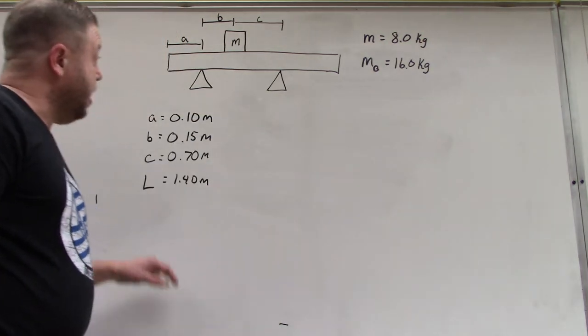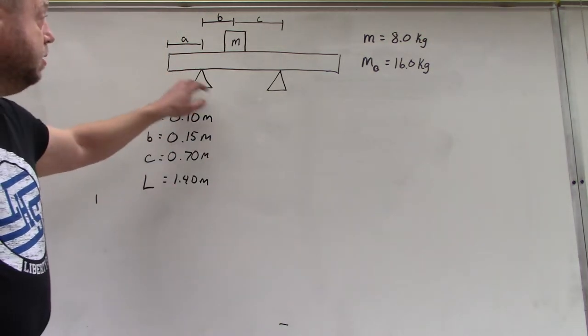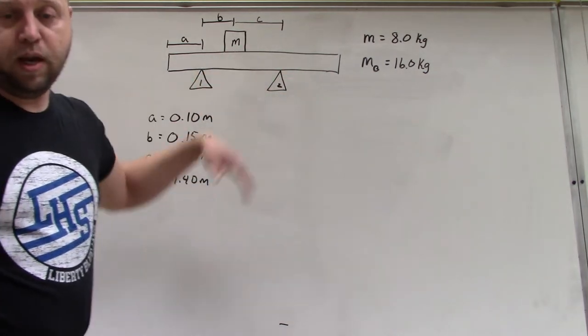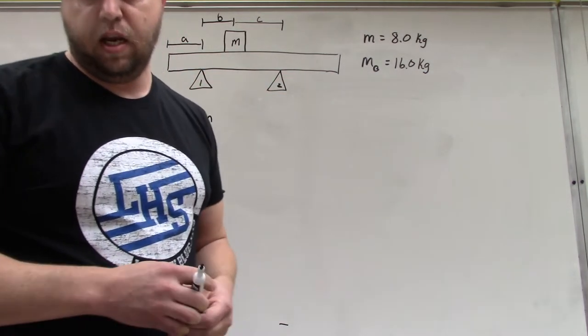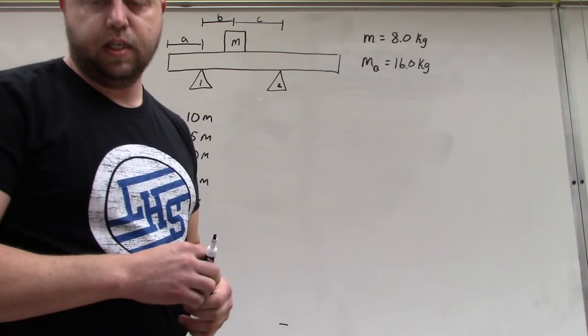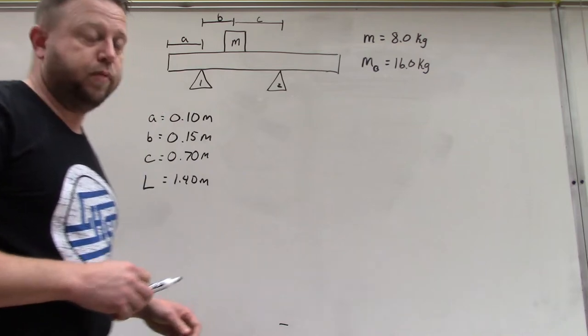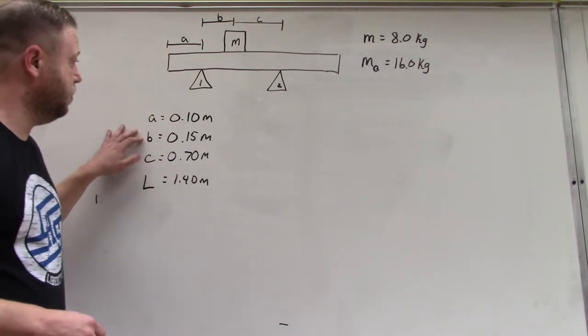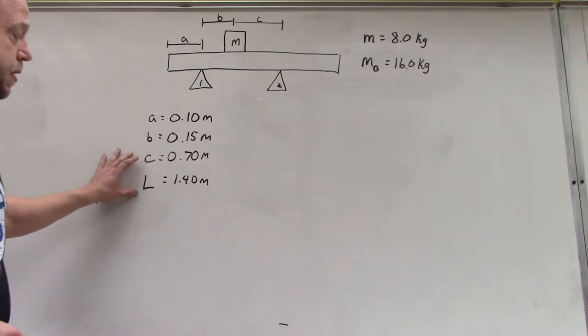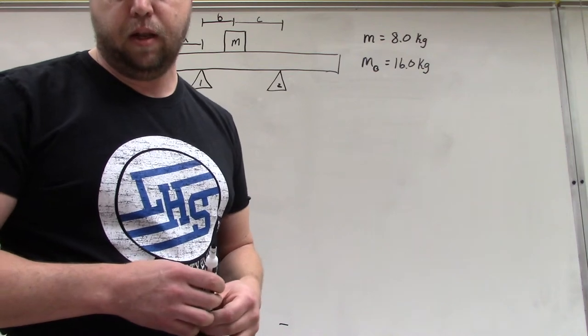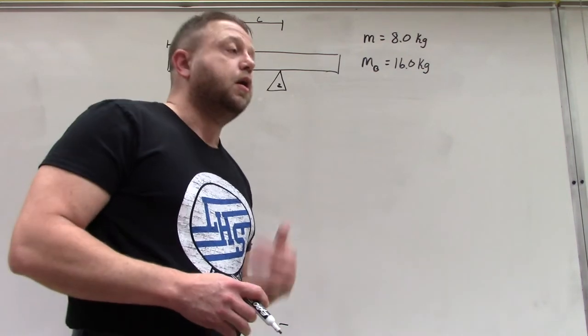We've got a balanced beam with fulcrum one and two, and we have a mass of 8 kilograms. The beam has a mass of 16 kilograms. We've got different points a, b, and c listed out here: a has a length of 10 centimeters, b at 15 centimeters, and c at 70 centimeters. The beam length is 1.4 meters.